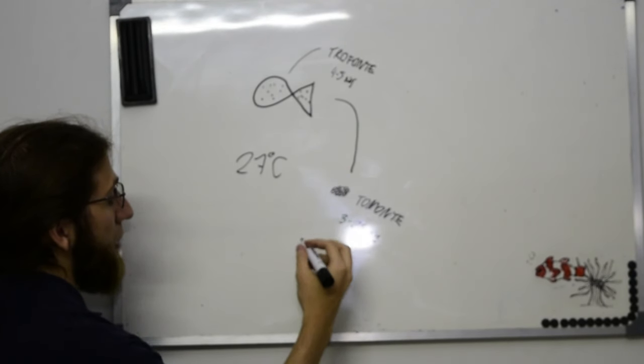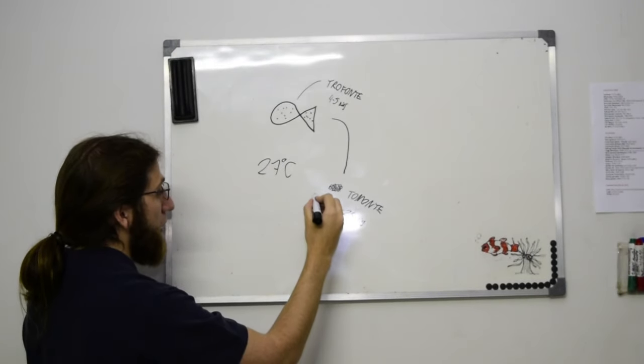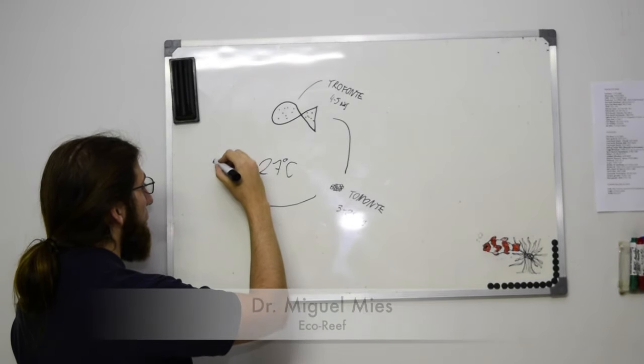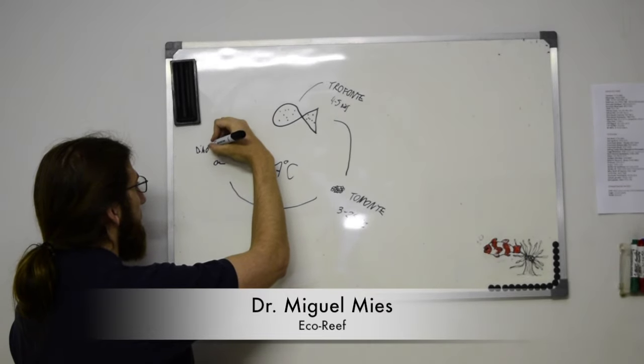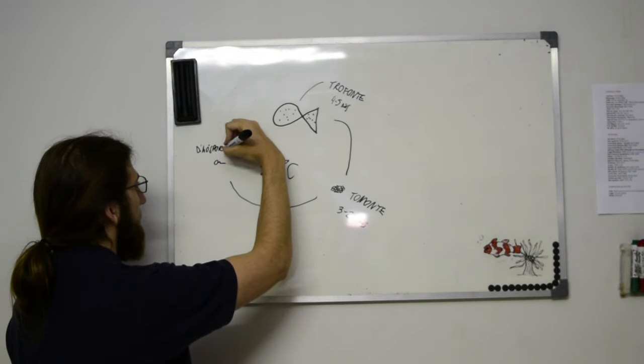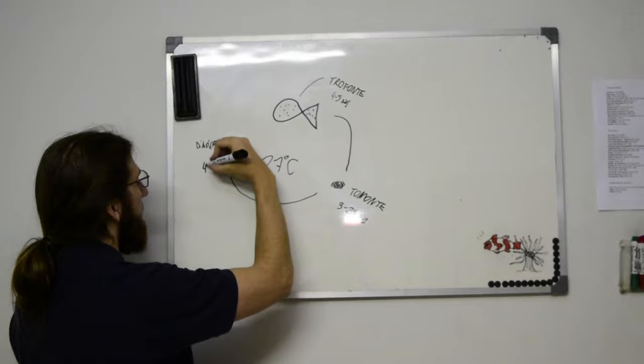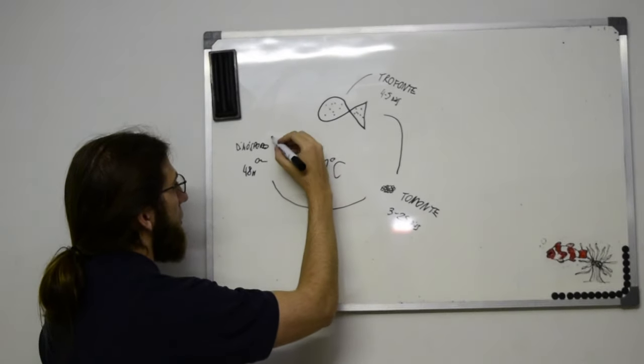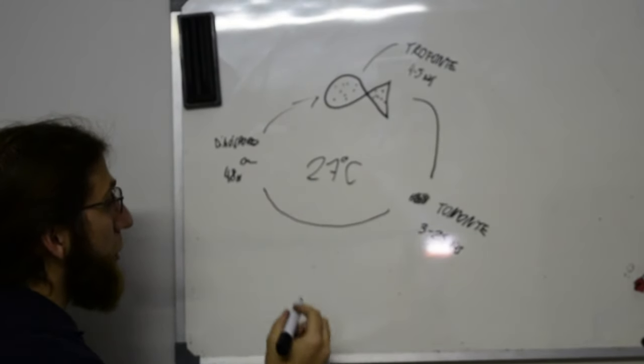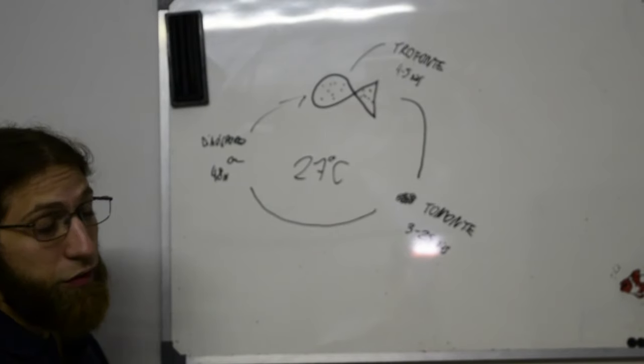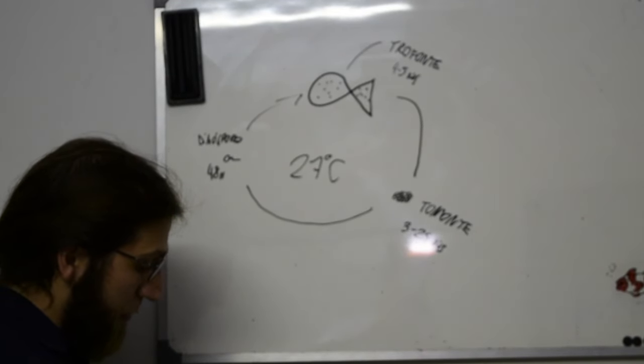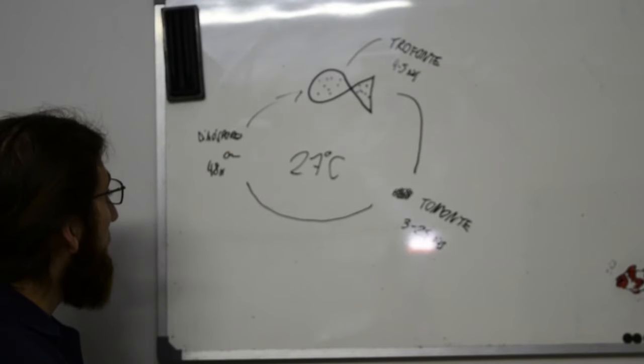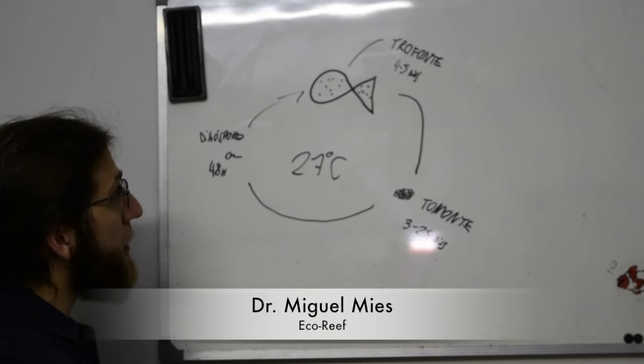Esse estágio aqui, depois desses 3 a 25 dias, ele vai aplodir um cara que chama o dinósforo, que normalmente vive por apenas 48 horas. Esse estágio, o dinósforo, é o estágio que vai reinfectar o seu peixe. O dinósforo tem situações excepcionais que ele dura mais tempo, mas normalmente 48 horas. Ele não sobrevive se ele não encontrar o peixe.